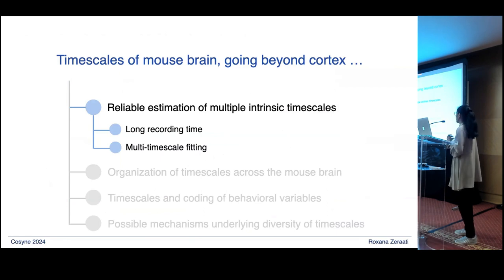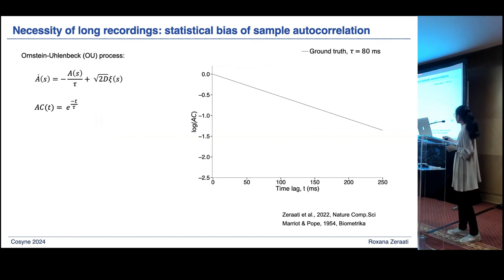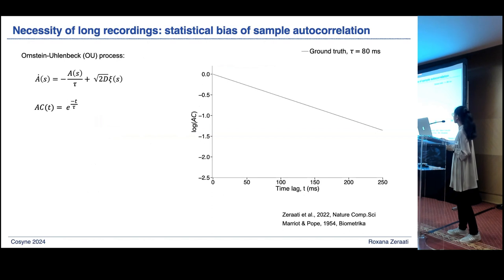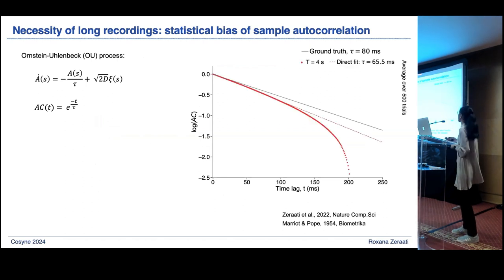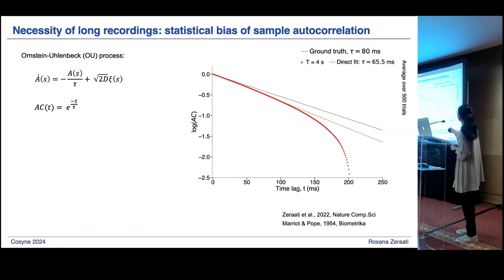Let's start with estimating timescales. The first thing I want to argue is that we need long trials and long recordings to reliably estimate timescales. To show why, I'll use synthetic data from a process with a known timescale — the Ornstein-Uhlenbeck process, whose autocorrelation is an exponential decay with a given timescale tau. When we simulate this with four-second trials and compute the autocorrelation, the estimated timescale deviates from the ground truth, leading to underestimation. The situation gets worse with shorter trials, which is much closer to typical neuroscience experiments.